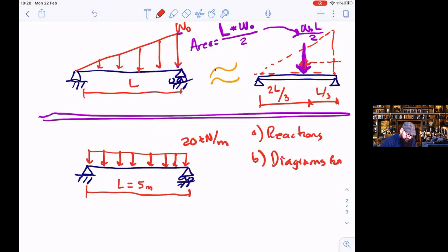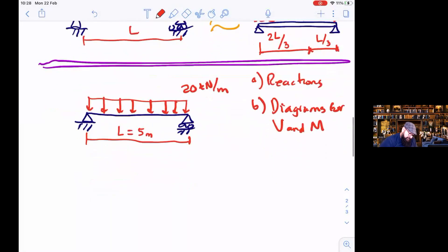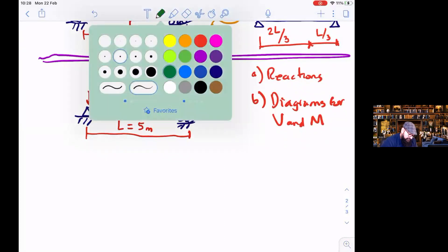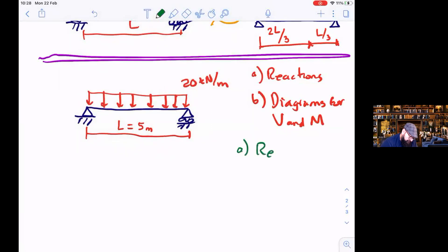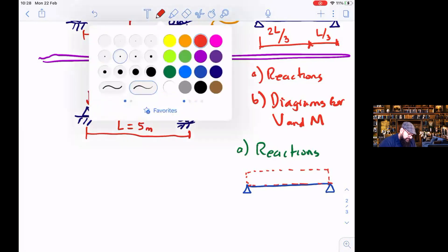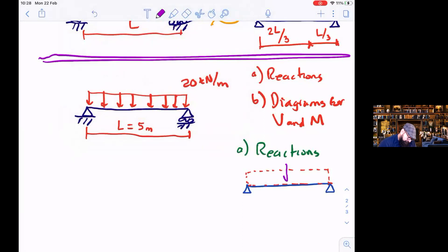Diagrams for V and M. So first step, reactions. What did I tell you now? I have a distributed load. What do I need to do with that distributed loading? I need to replace it with a concentrated load. What is the value of that concentrated load? What is the area of this rectangle?